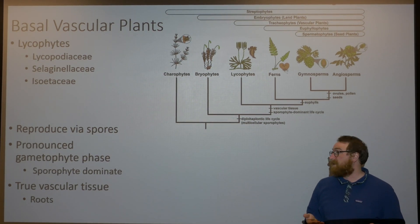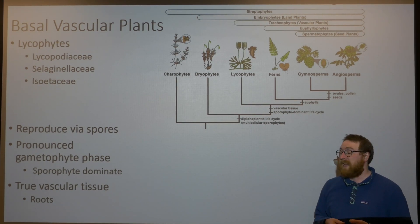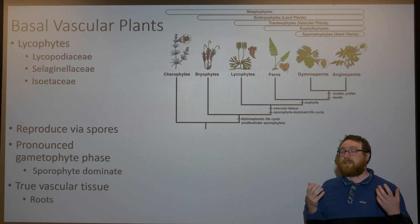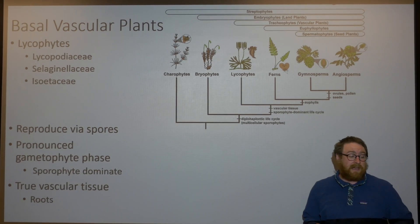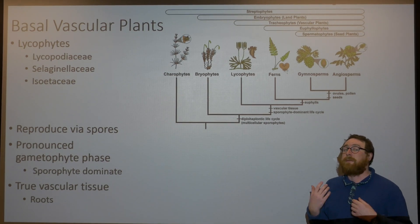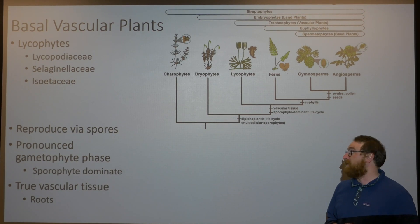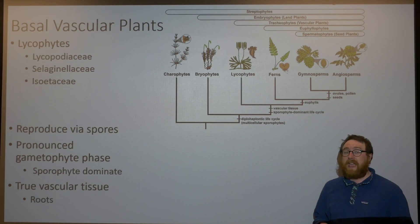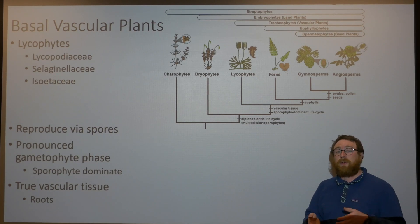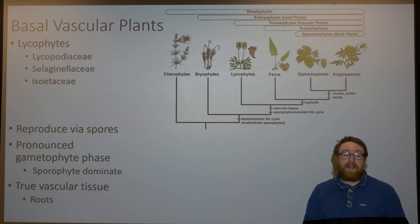They reproduce by spores and have a gametophyte stage and a sporophyte stage, but here we see a transition into the sporophyte stage being dominant. They also importantly have true vascular tissue — that xylem and phloem we talked about last week. And unlike the bryophytes, they're going to have true root tissues. These roots not only anchor them to the ground but also bring water into their bodies to move through that vascular tissue, particularly the xylem.